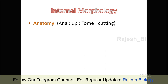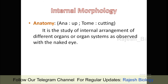Internal morphology has two branches: anatomy and histology. Anatomy comes from 'ana' meaning up and 'tome' meaning cutting. It is the study of the internal arrangement of different organs or organ systems as observed with the naked eye. For example, if we dissect a rabbit or a cockroach, we can see the digestive tract. The digestive tract is present at the central axis in all cockroaches. We study the organs within the body with our naked eye after dissecting.